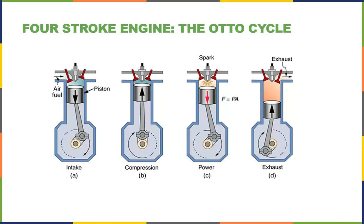A car engine is a simple example of a heat engine. The car engine runs on what is called the Otto cycle — named after the German engineer who developed it, spelled O-T-T-O. Car engines are called four-stroke engines.